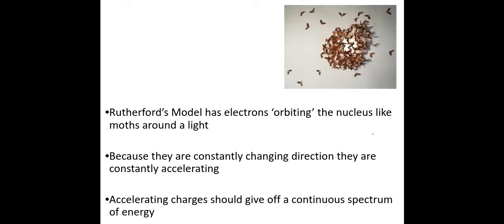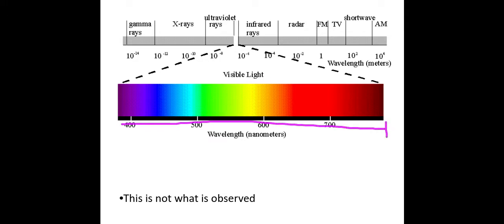Bohr's model had electrons sort of willy-nilly all over the nucleus — think of it like moths flying around a light bulb, attracted to it but with no particular order. Because of that, they should be acting in a particular way. A charge moving in a circle is technically accelerating, and we know that accelerating charges should give off a continuous spectrum of light. So if this is how atoms are, they should be giving off a constant continuous spectrum, and we should see all the colors of the rainbow. But that is not the case.